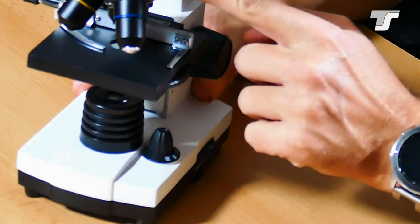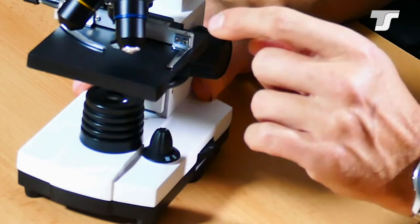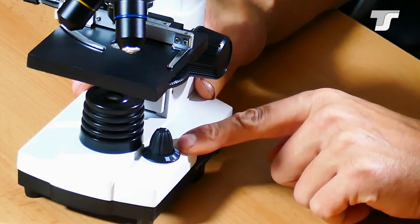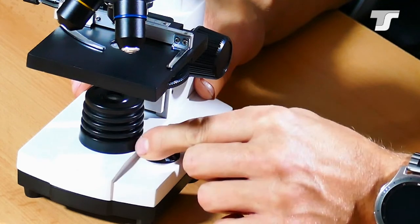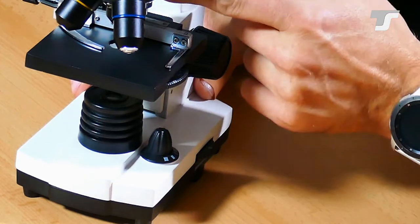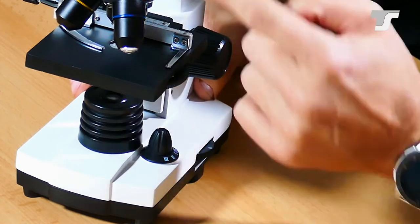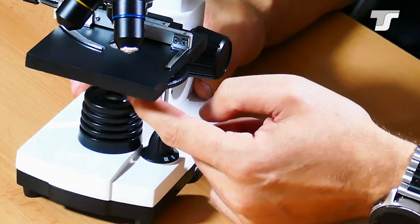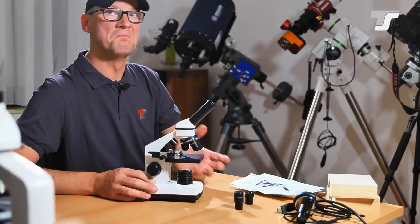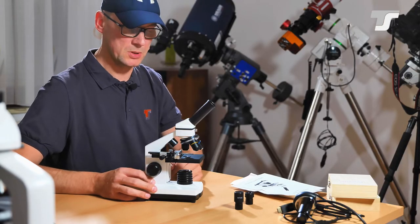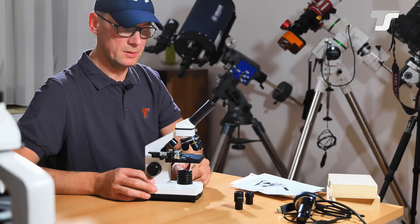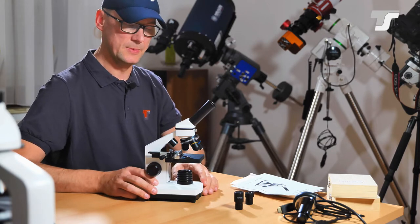And to enable these two lamps, you use this knob here. It has basically four positions: only the top light, the reflecting light, only the transmitting light, or both of them. Maybe sometimes you have an object where you need both. That is possible and you can adjust this here, switch it on and off.